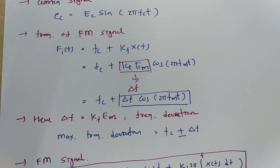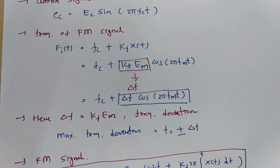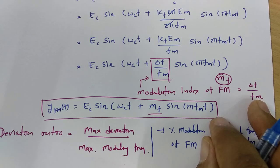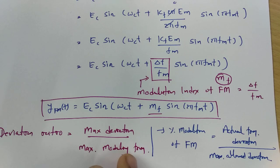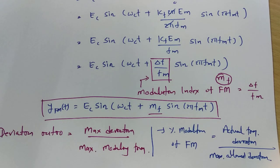Here are the key basics: frequency deviation is Kf into Em; modulation index of FM is delta f divided by fm; deviation ratio is maximum deviation divided by maximum modulating frequency; and percentage modulation of FM is actual frequency deviation divided by maximum allowed deviation. This is how we calculate frequency deviation and modulating index of FM.